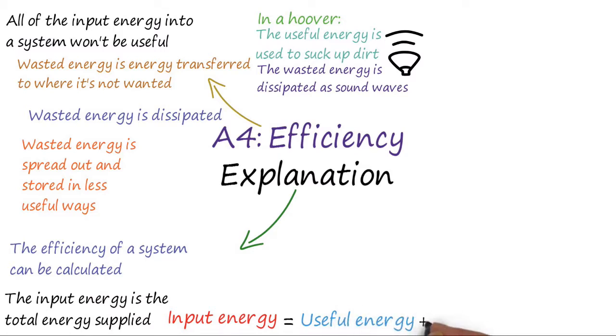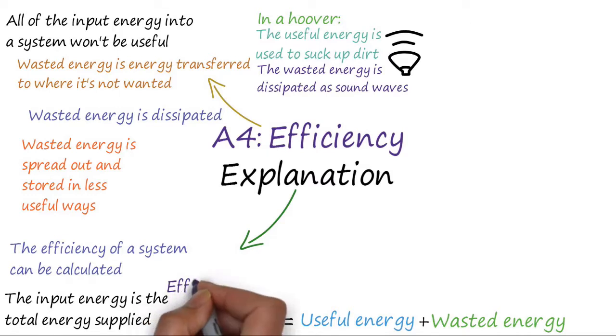The useful energy transferred by the system is called the useful output energy. Due to the principle of conservation of energy, the total input energy will always equal the useful output energy plus the energy wasted by the system.